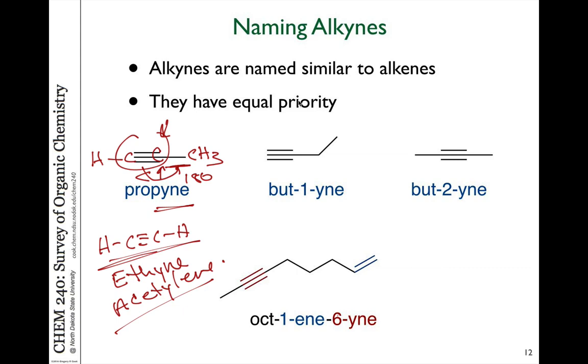When your chain is long enough to be able to have different isomers for the position of the triple bond, then again we have to use numbers. So in this case, here's but-1-yne. And in this case, here's but-2-yne.